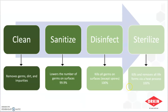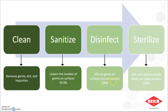There are some protocols we should always follow in any lab. Cleaning means removing germs, dirt, and impurities. Sanitizing lowers the number of germs on the surface. Disinfecting kills all germs on the surface, except spores. Sterilizing kills and removes all forms via a heat process — that is 100% accuracy.